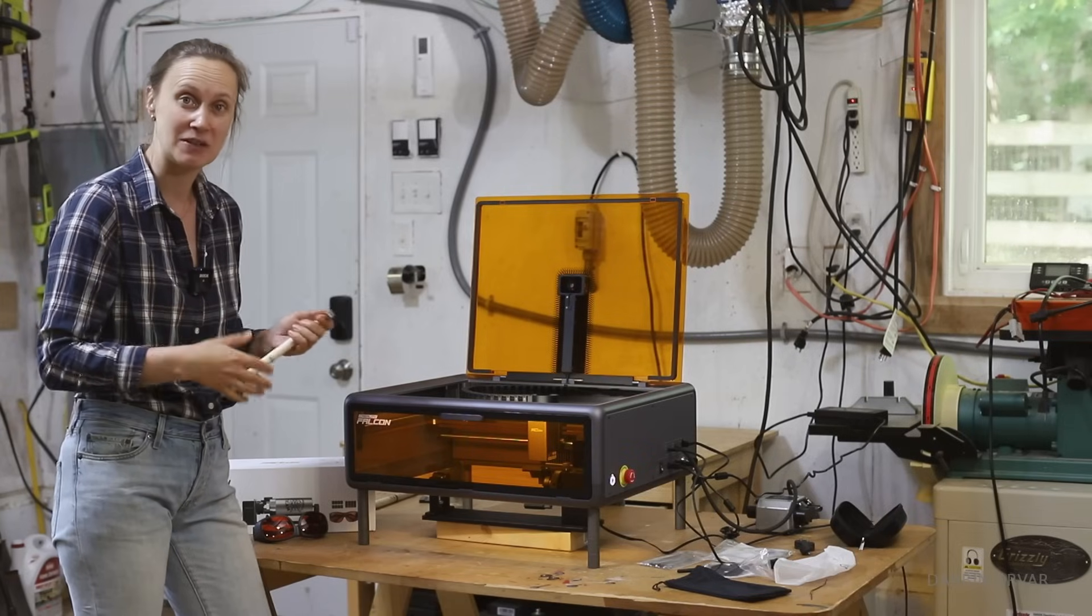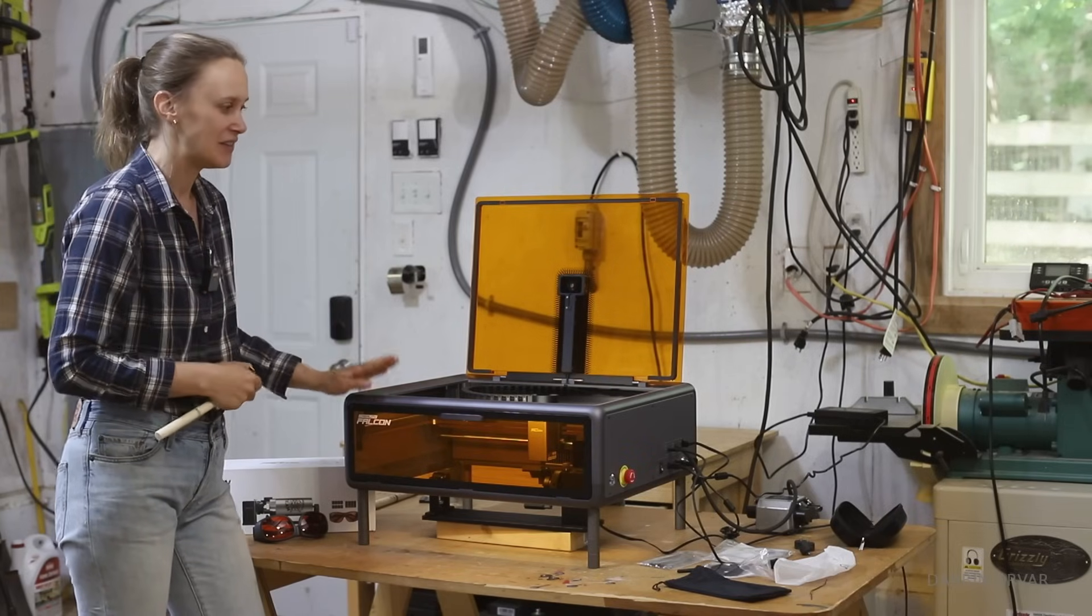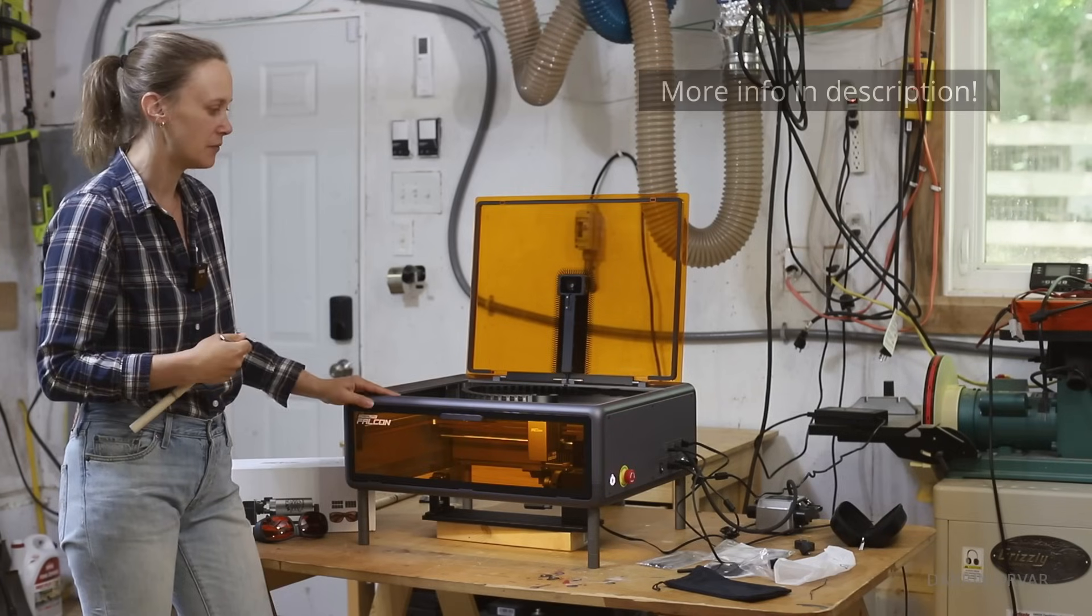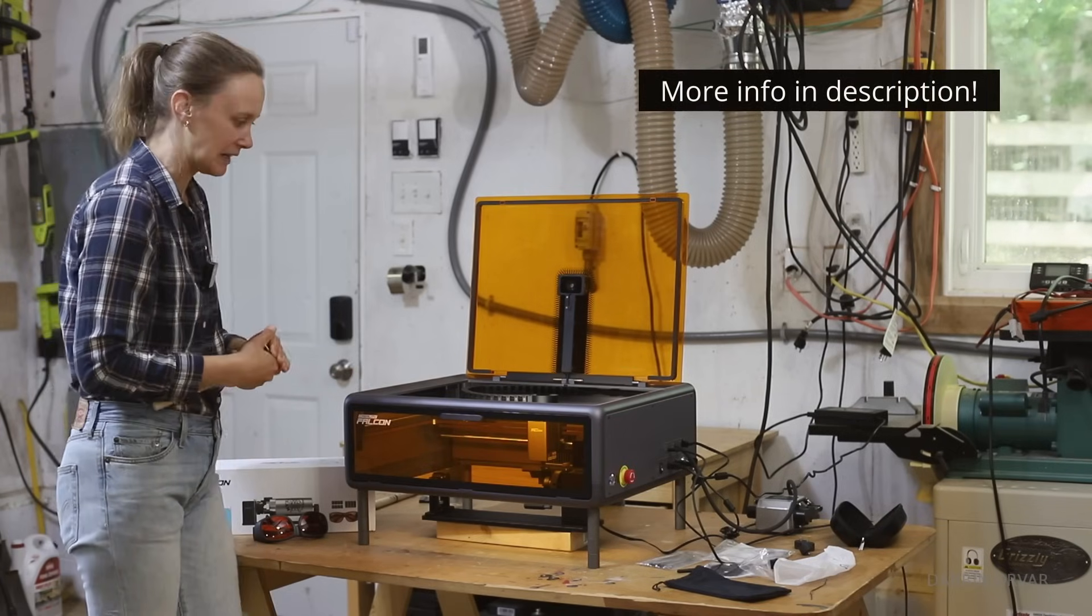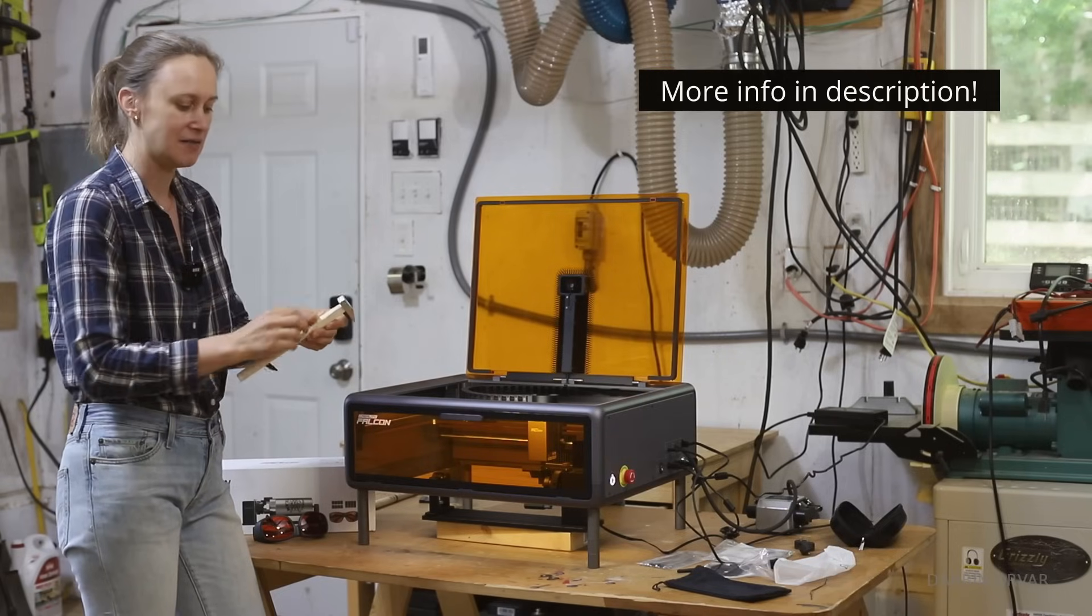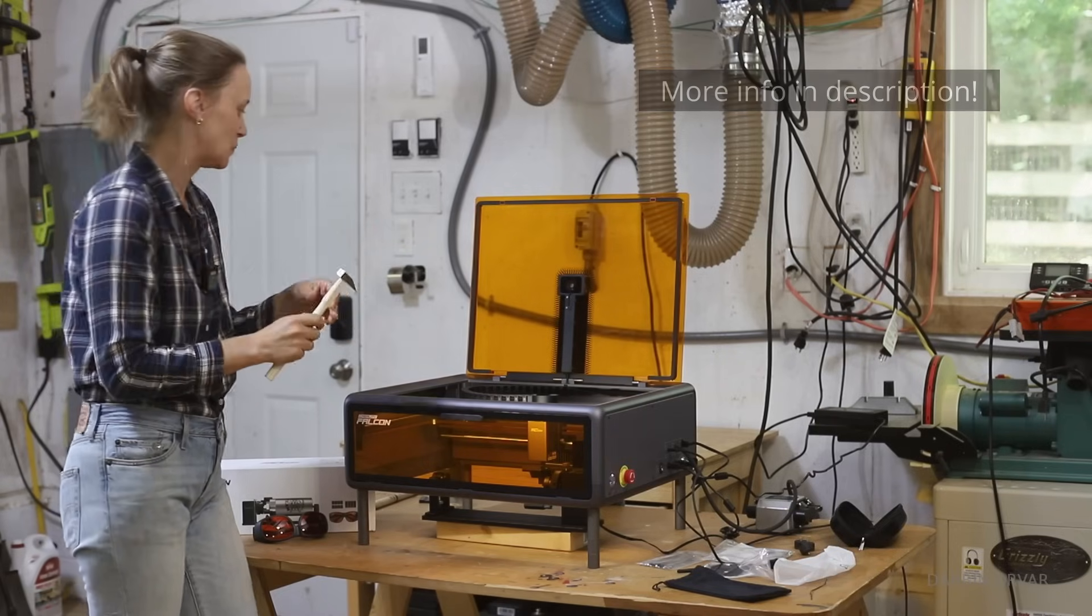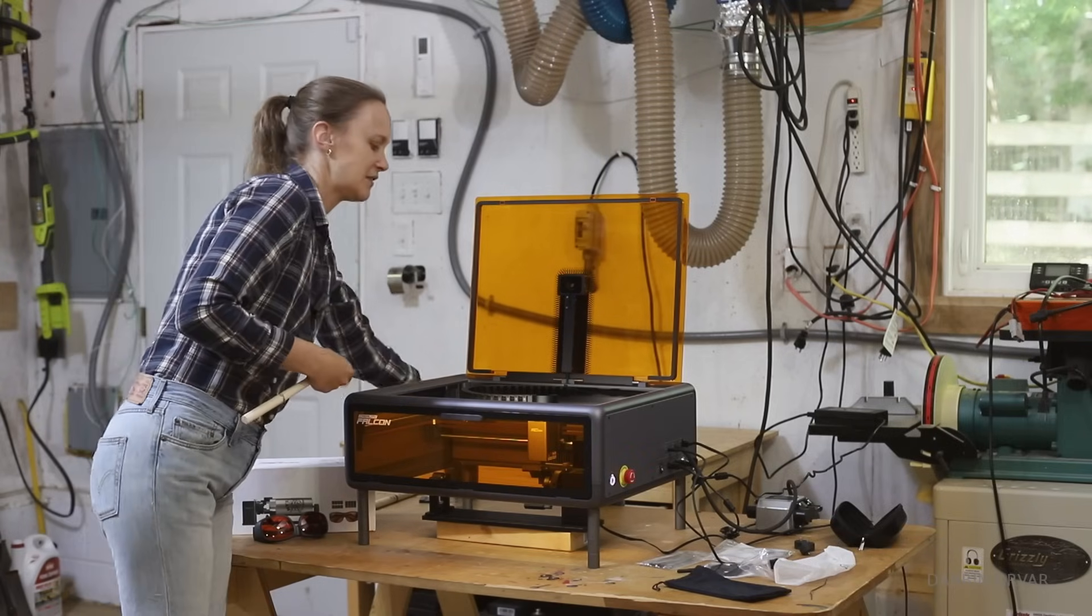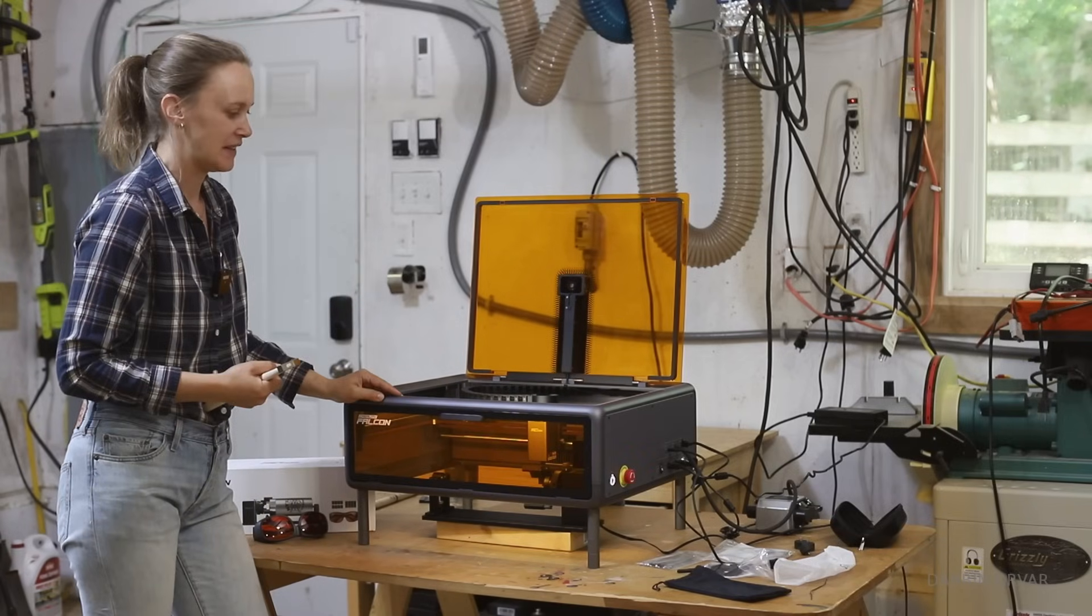If you're thinking about starting a business or you are running a business and you want a laser engraver that's relatively small, doesn't take up a lot of room, and has the flexibility like this with the rotary for round things and flat things - of course you can engrave things in different materials, here's wood, just showing a metal bottle - there are lots of options in terms of engraving things.